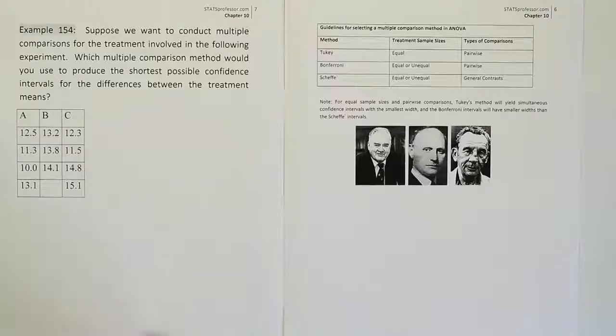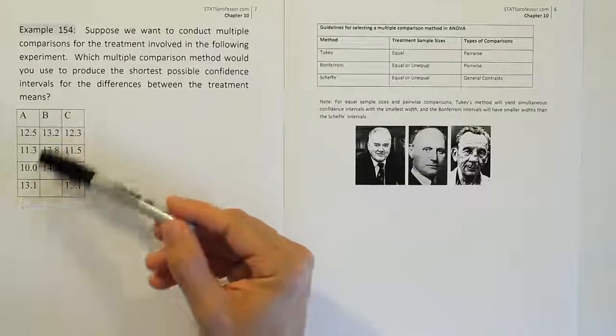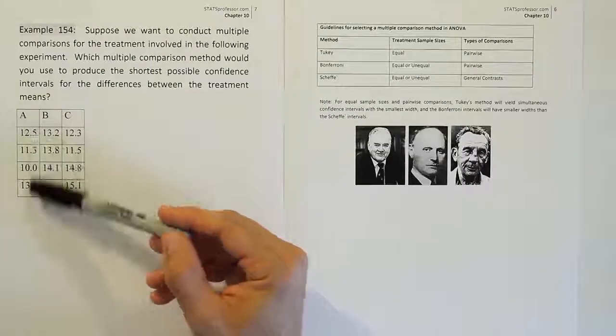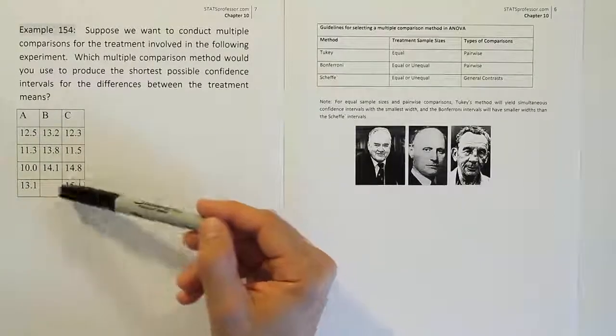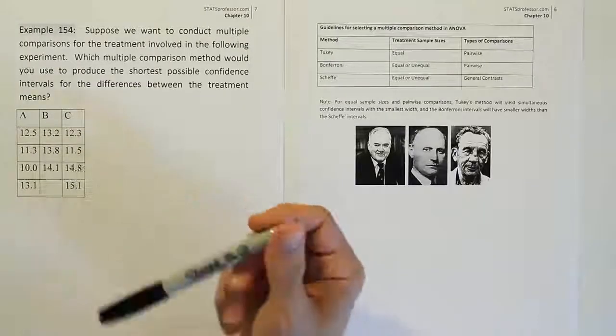Okay, so when you look at it, you can tell that the design is unbalanced, meaning that there's unequal sample sizes among the treatments. They don't all contain the same number of experimental units. This one is missing one. The other ones each have four. So that means it's an unbalanced design.